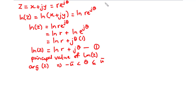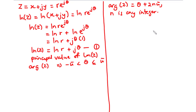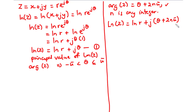One important thing to note is that the argument of z is itself multi-valued. Therefore, the argument of z equals theta plus 2n pi, where n is any integer. So to find the general value, or the set of all possible values, of the natural logarithm of z, we replace theta by theta plus 2n pi. From Equation 1, ln z equals ln r plus j times (theta plus 2n pi), where n is any integer.